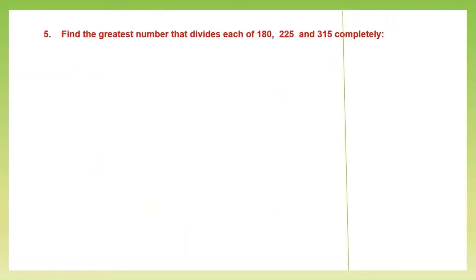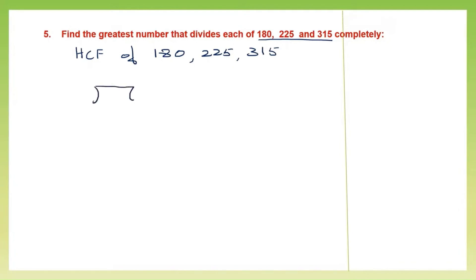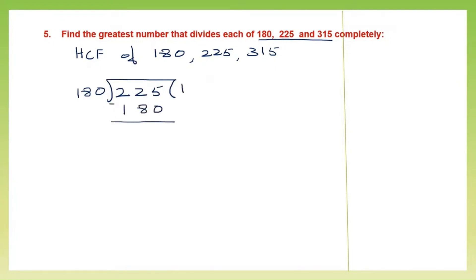Question 5: find the greatest number that divides each of these completely. The greatest number that divides these numbers completely is the HCF. So we must find the HCF of 180, 225 and 315. Whenever you have big numbers, it's always better to use the division method. So let's divide 225 by 180. 180 into 1 gives us 180, minus; here we need to borrow — this is 1 and this is 12. 12 minus 8 is 4 and this is 0. So the remainder is 45.